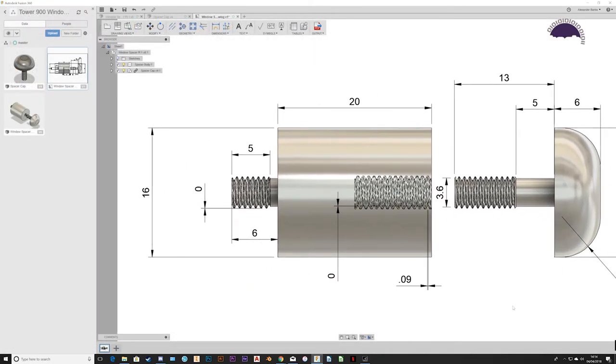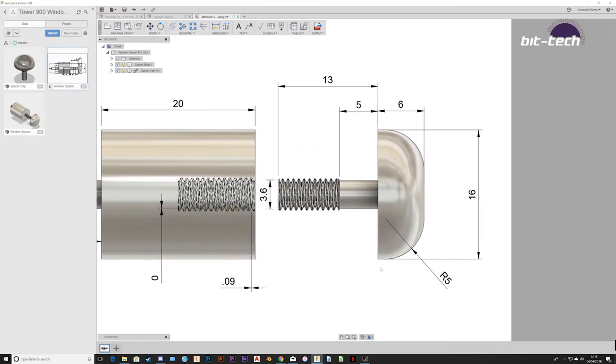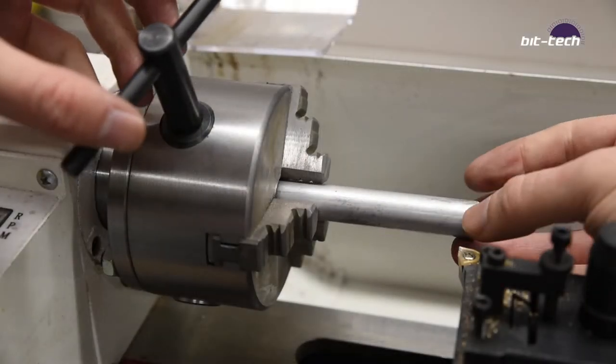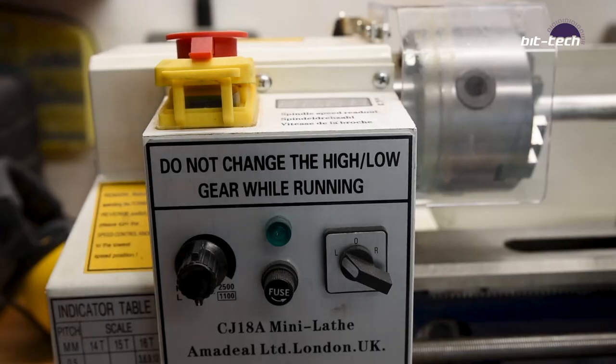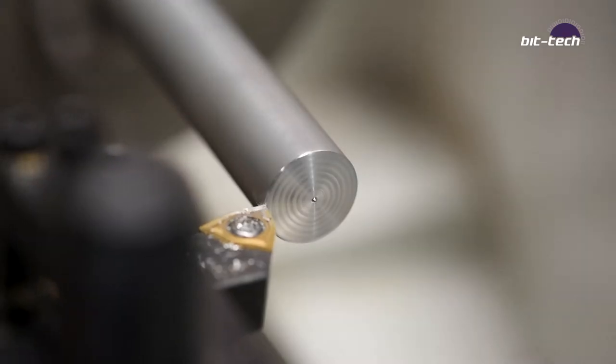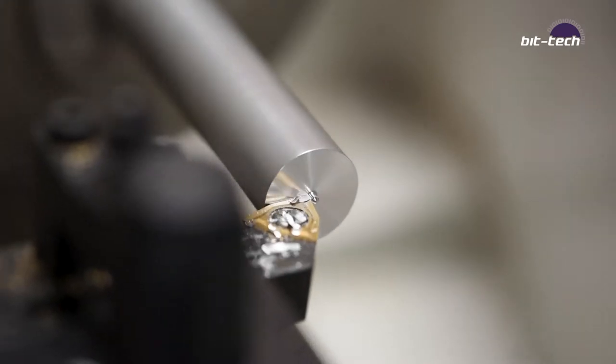Since this is a turned part I'm going to be using a lathe to make it. It's really quite an essential tool for this particular kind of work. I started with some 17 millimeter aluminum rod stock. I then mounted it into the lathe, faced the end and then turned down the outside to 16 millimeters.